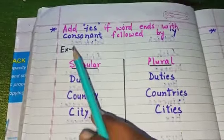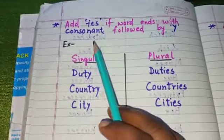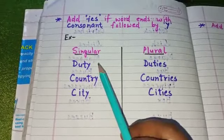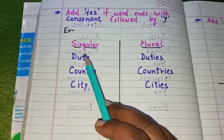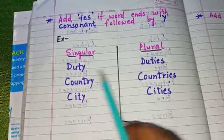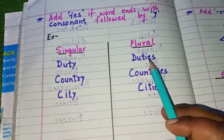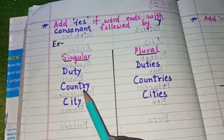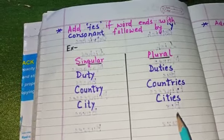Next is: add 'ies' if the word ends with a consonant followed by 'y'. Let's see some examples. These are singular form and these are plural form. The first word is duty — ends with 'y', remove 'y' and add 'ies' to make plural form. Country, countries. City, cities.